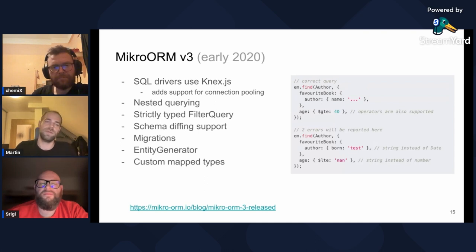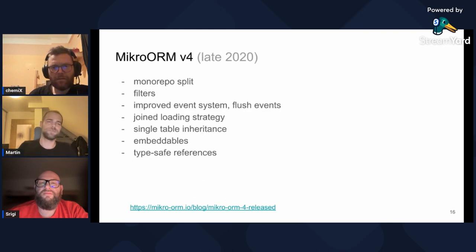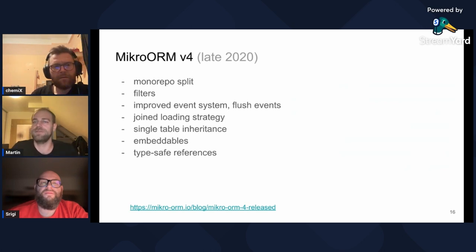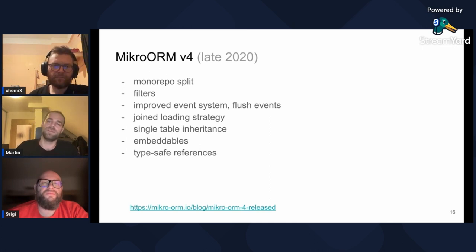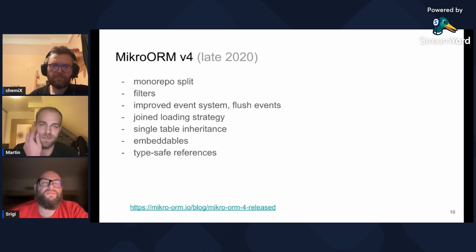Version 3 also introduced so-called custom map types — a feature that allows you to map database values back and forth with anything you want. It's very handy for value objects or geometry types. Later that year, another major version landed. In version 4, the project was split into several smaller packages. The event system was greatly improved — notably the very powerful onFlush event was added, which allows you to modify how the flushing works internally. This release was another huge step towards type safety, as it introduced typesafe relations.